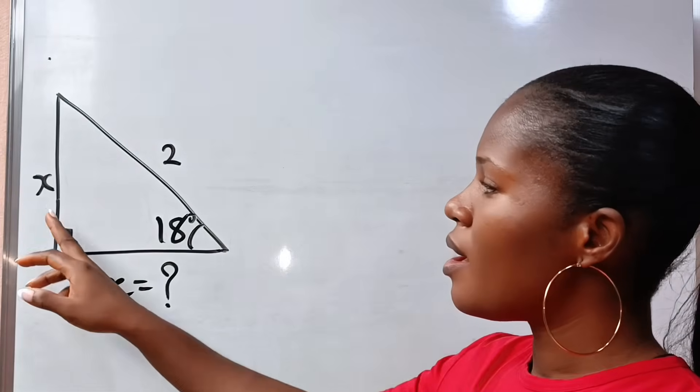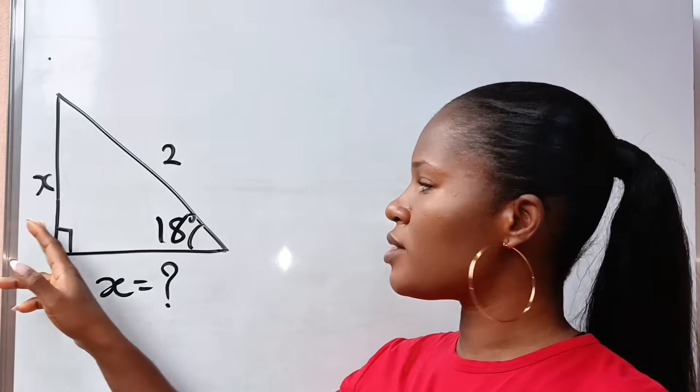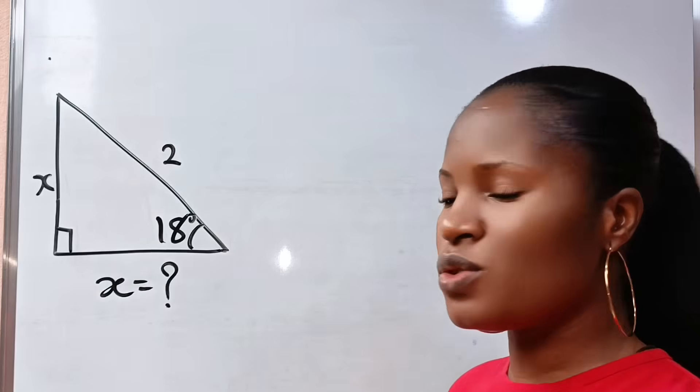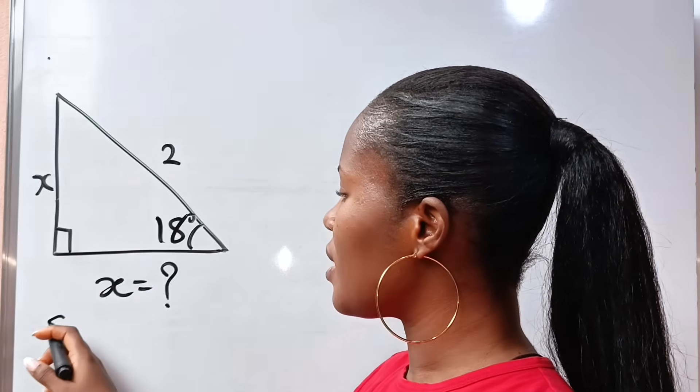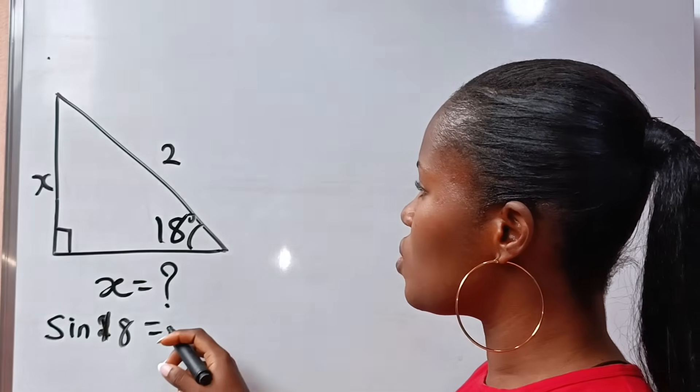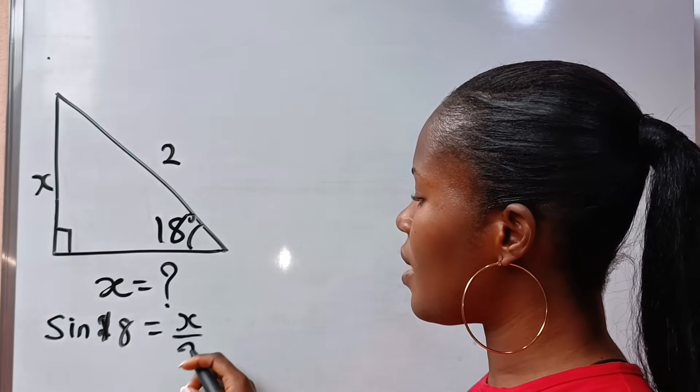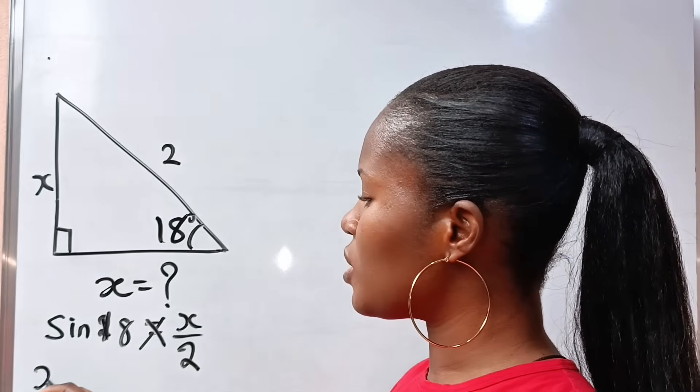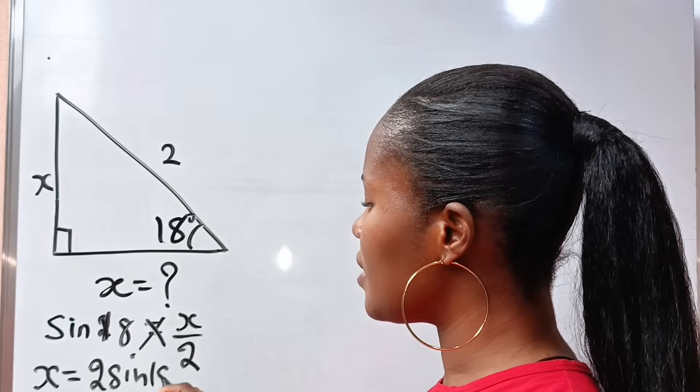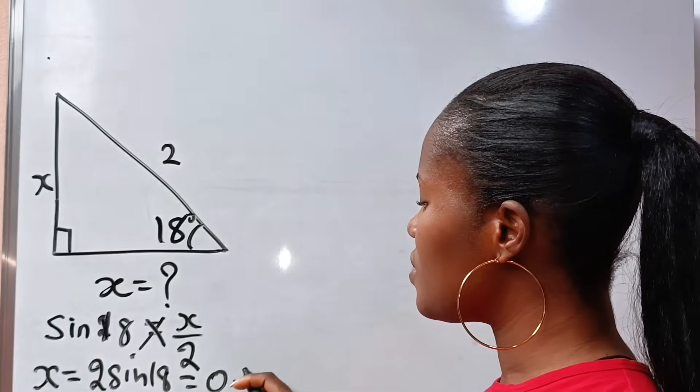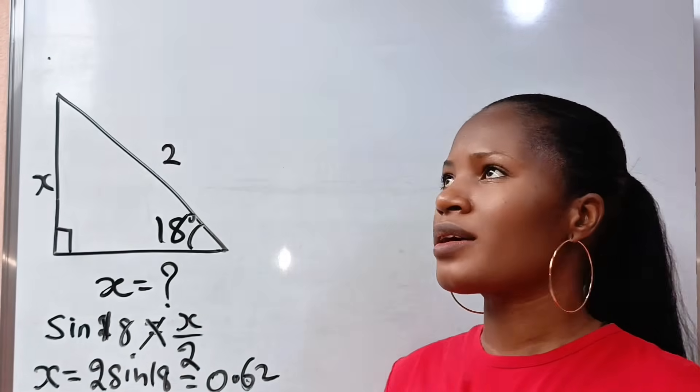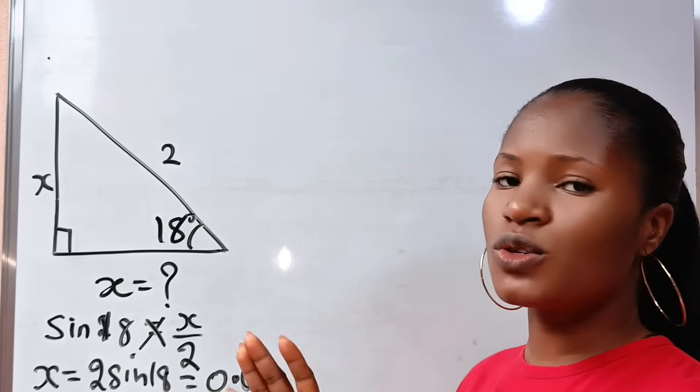What I mean by trig is x is the opposite of this angle and 2 is the hypotenuse. If we were asked to use trig, it should have been sine 18 is equal to x divided by 2. If we do cross multiplication, x will be equal to 2 sine 18, which will give us 0.62, something like that. Now, we are asked not to use trig.